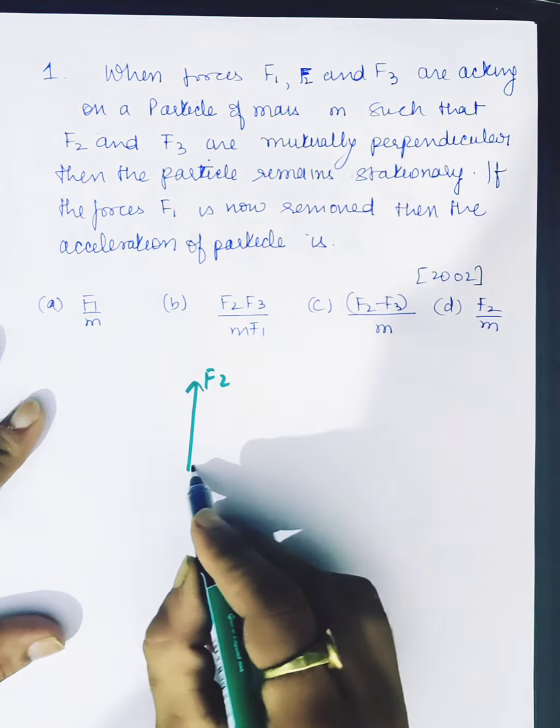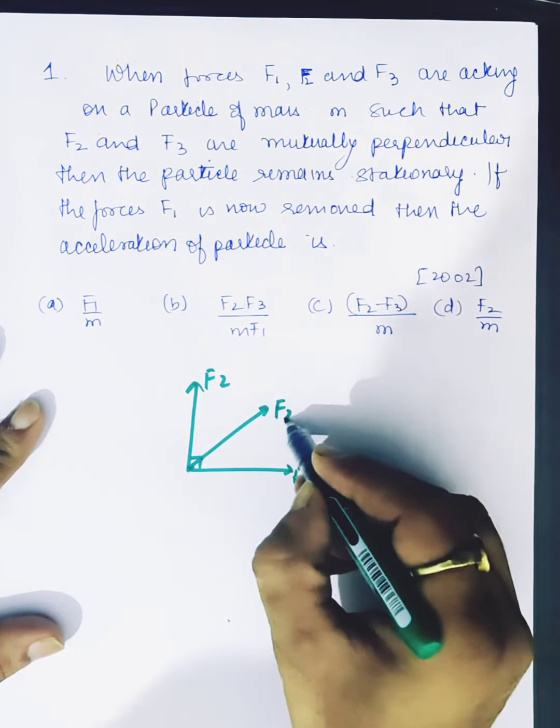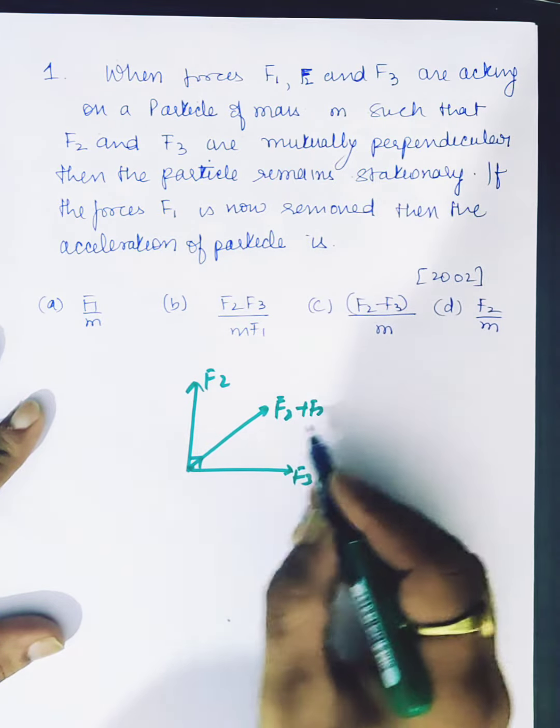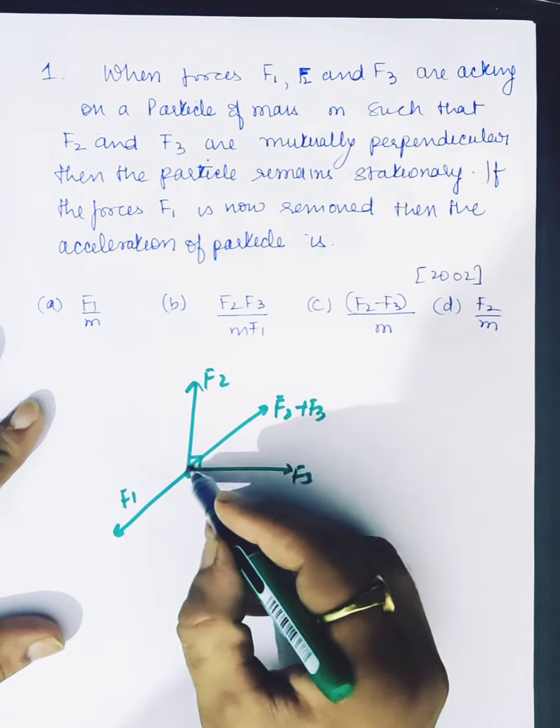This is F2 and this is F3. What is the resultant of F2 plus F3? And if exactly this is equal to F1, then the net force is zero to be stationary.